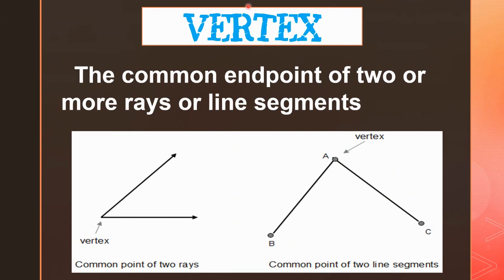Now we will see what is a vertex. The common endpoint of two or more rays or line segments is called the vertex. Here you can see the common point of two rays — that is the vertex. In this example, A is the vertex.